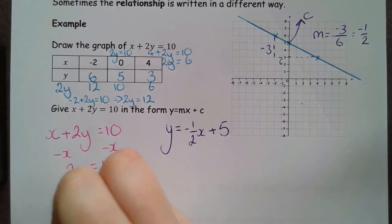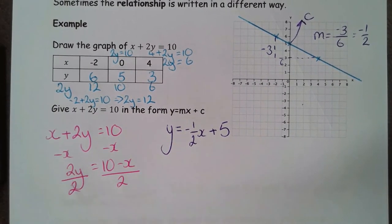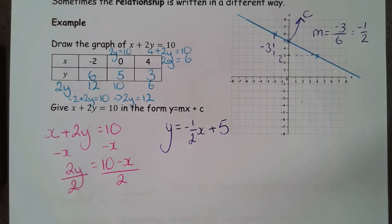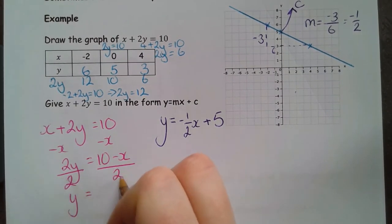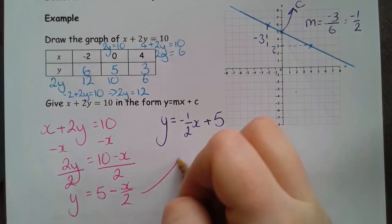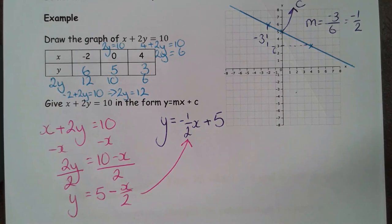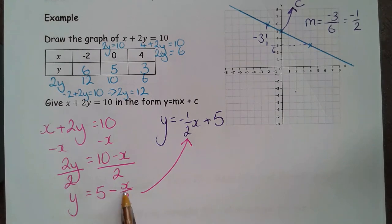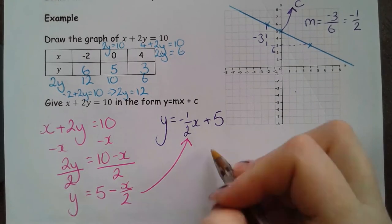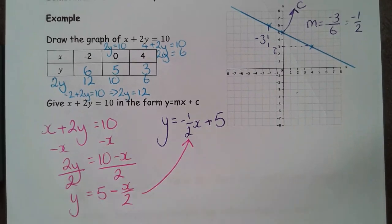And then to divide everything through by 2. It's important that we remember to divide everything by 2 at this point. Because that's going to get us y equals 5 minus x over 2. Which is actually perfectly equivalent to this y equals minus 1 half x. Because of this minus and the over 2 plus 5. So, your gradient is minus 1 half and the intercept is plus 5.